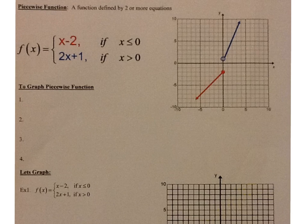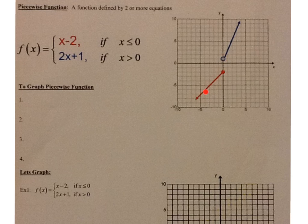What we're going to work on today is graphing a piecewise function. A piecewise function is a function defined by two or more equations. Notice that even though there are two graphs, it's still a function — it still passes the vertical line test. The reason it passes even here is because you have an open circle and a closed circle. It's the red line that includes the x value of 0, but the blue line does not include x equals 0, so therefore it's still a function.